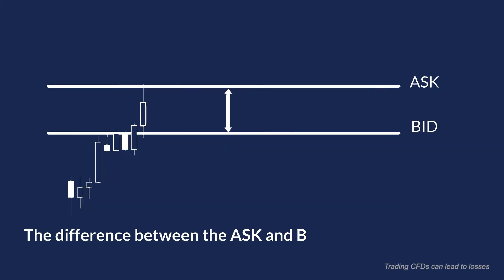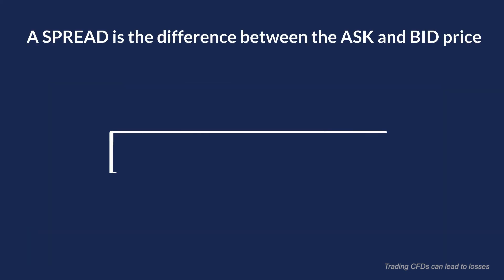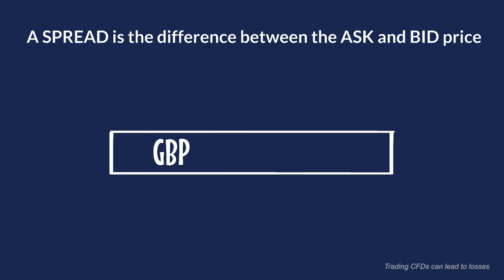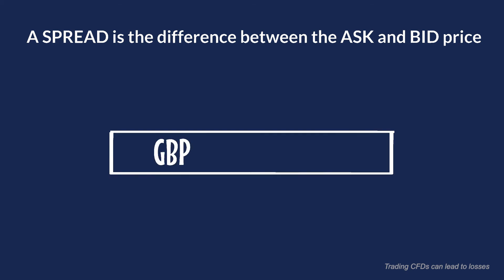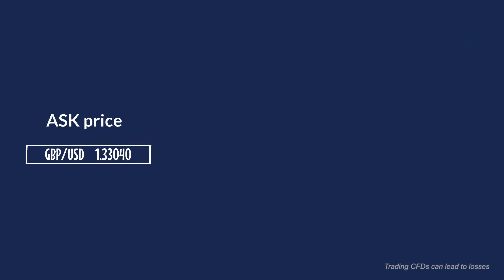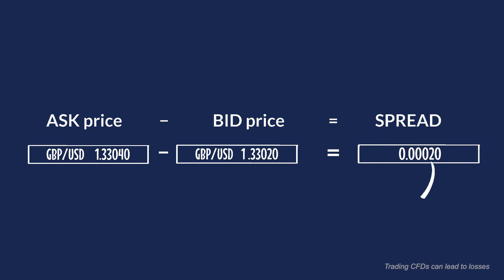The difference between the ask and bid price is the spread. For example, if the British pound to US dollar is trading with an ask price of 1.33040 and a bid price of 1.33020, then the spread will be the ask price minus the bid price. So the difference of 0.00020 is what we call a two-pip spread.